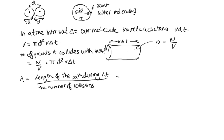So the length of the path it travels is given by v delta t. We've shown that there. And the number of collisions is given by this here, n on v pi d squared times the velocity delta t. This v is the volume. This v is the velocity.